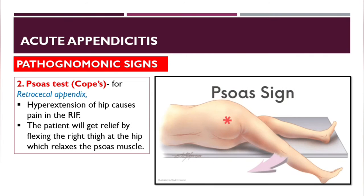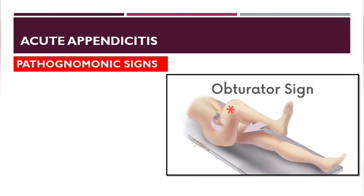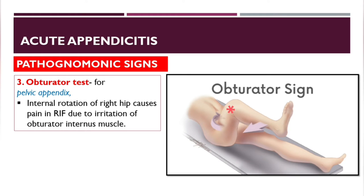The Psoas sign is specific for retrocecal appendicitis: hyperextension of the hip causes pain in the right iliac fossa, and the patient gets relief by flexing the right thigh at the hip, relaxing the psoas muscle.